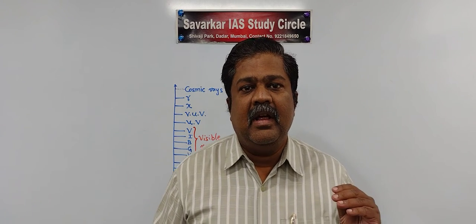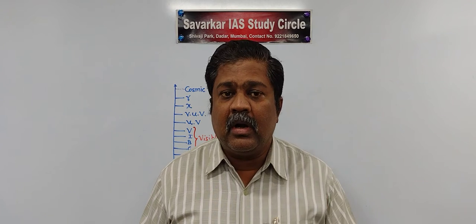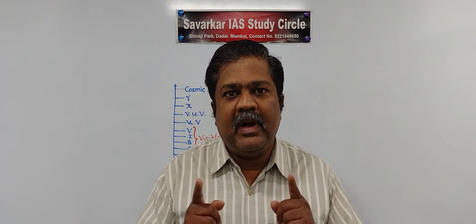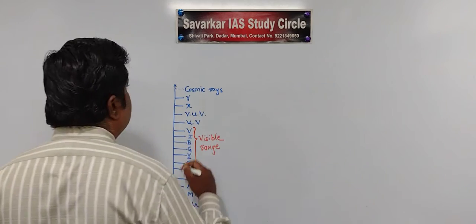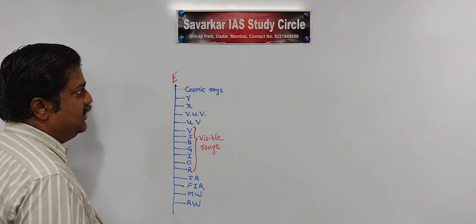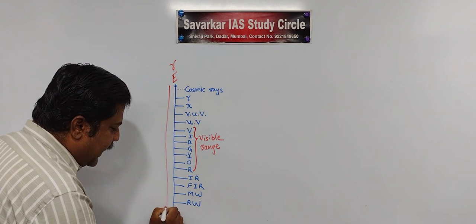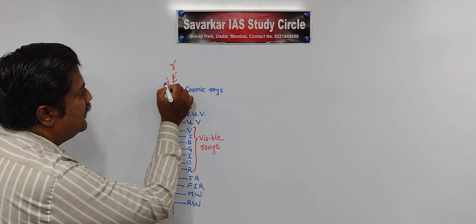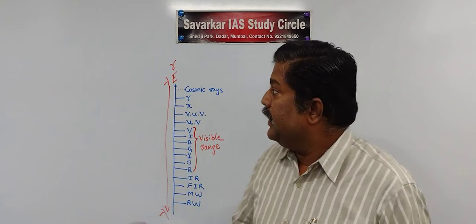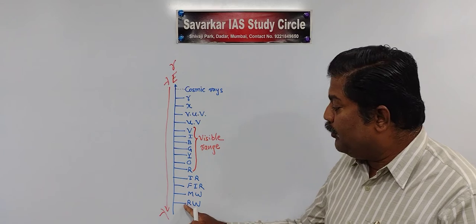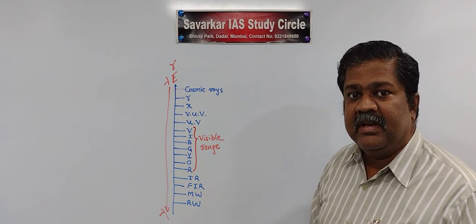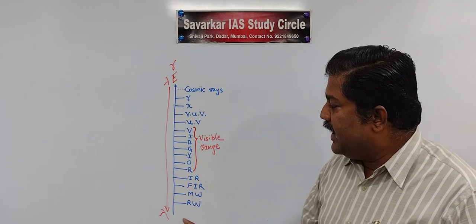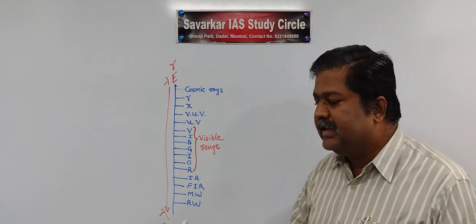We can arrange them in increasing wavelength or according to increasing frequency. Wavelength and frequency are inversely proportional — as wavelength increases, frequency decreases and vice versa. In this graph, we can check either by increasing energy, increasing frequency, or increasing wavelength. From radio wave to gamma rays there is increasing energy and increasing frequency, whereas from gamma rays to radio waves there is increasing wavelength.